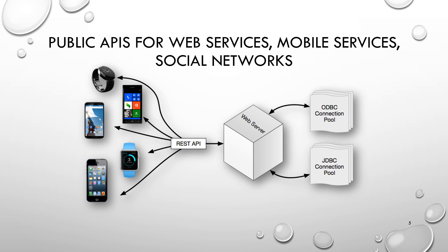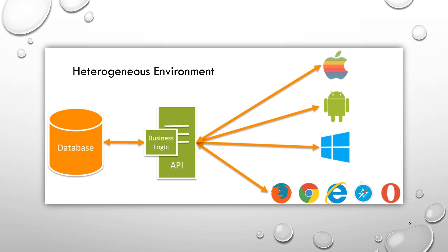Exchanging data between software applications written in various programming languages can be done using web services over computer networks like the internet, similar to inter-process communication. This diagram shows that there could be various heterogeneous environments used for developing a REST API. REST says: develop your code in whatever technology you want and just call me when needed, and I will provide you the data in JSON format, YAML, or plain text. So different developers using Java, Python, or Scala can all connect to REST, which makes the system loosely coupled — and this is the most highly demanded feature in the world of microservices.